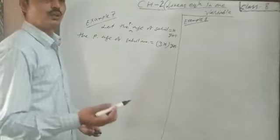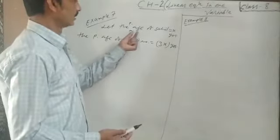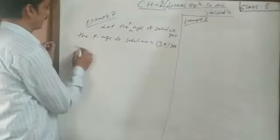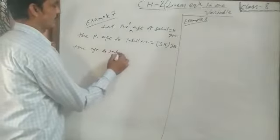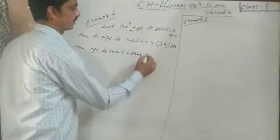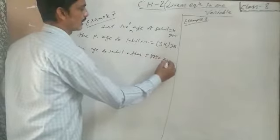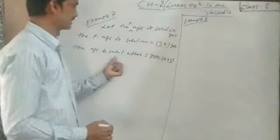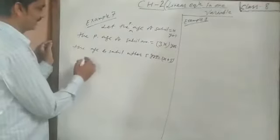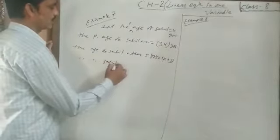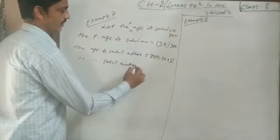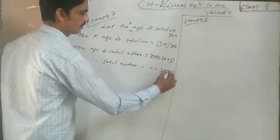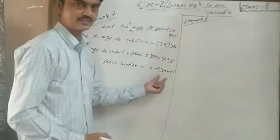In earlier classes, you learned how to calculate age when 'after 5 years' or 'before 5 years' is given. The age of Sahid after 5 years is X plus 5, because his present age is X. Similarly, the age of Sahid's mother after 5 years is 3X plus 5.